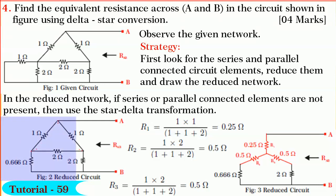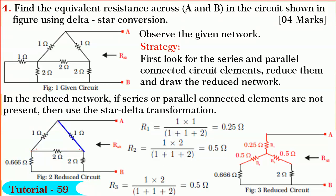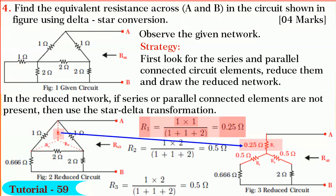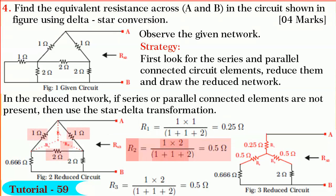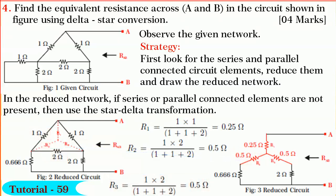Now in the reduced network, we find that series or parallel connected elements are not present. But 1 ohm, 1 ohm, and 2 ohm are in delta; 0.666 ohm, 2 ohm, and 2 ohm are in delta. I prefer to convert 1 ohm, 1 ohm, and 2 ohm connected in delta into star as shown. R1 is equal to 1 times 1 divided by (1 plus 1 plus 2) equal to 0.25 ohm. R2 is equal to 1 times 2 divided by 4 equal to 0.5 ohm. The reduced network by introducing the star in place of delta is shown in figure.